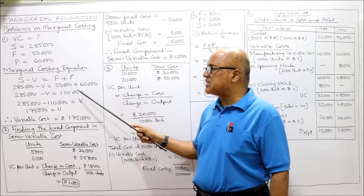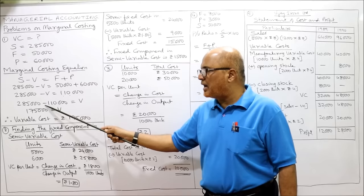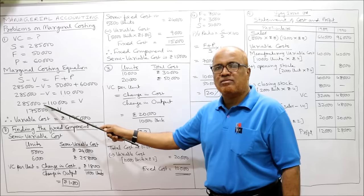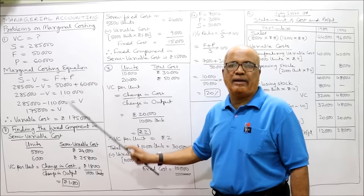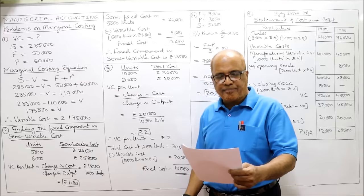Rearranging: V equals 2,85,000 minus 1,10,000. Therefore variable cost V equals 1,75,000. That's problem one completed.